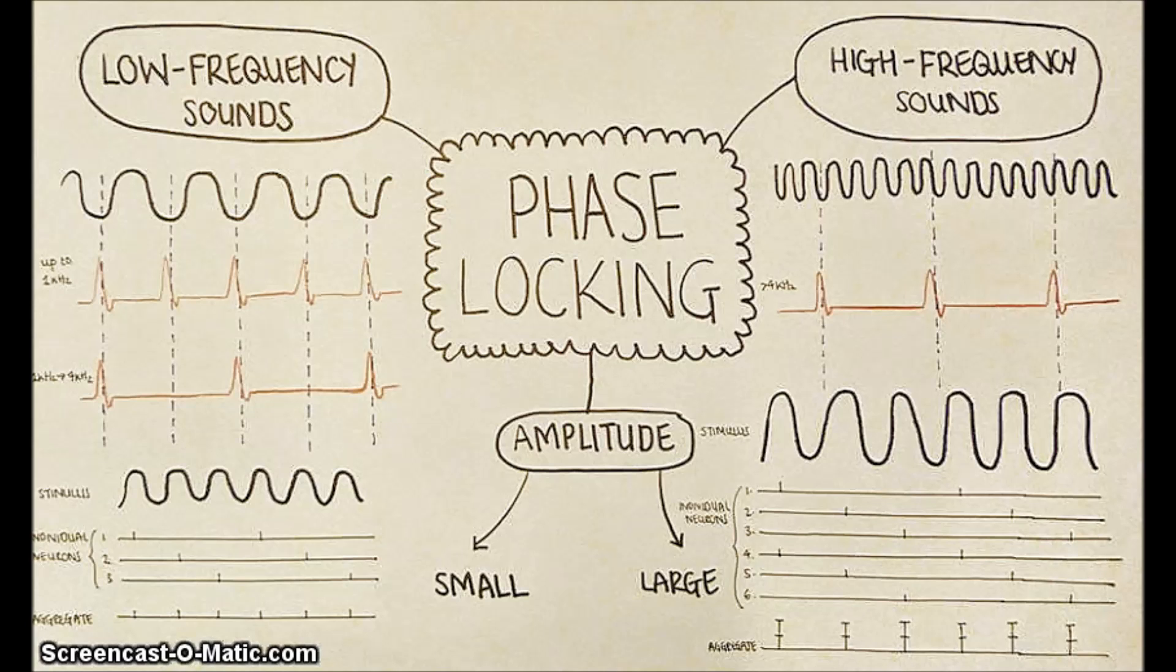Phase locking is where neurons only fire at a preferred phase of the sound wave in each cycle. This is usually at the peak amplitudes.